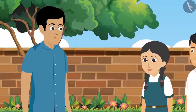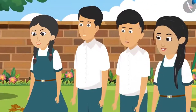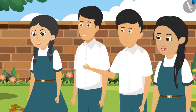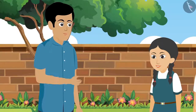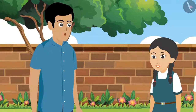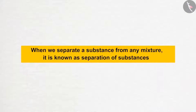Rohit Bhaiya, dried leaves, pebbles and soil have been mixed in this tub. Now we may have trouble making art objects from them. We should separate all these substances. I liked Aman's suggestion — we can separate all these substances. What is separation? Sahil, when we separate a substance from any mixture, it is known as separation of substances.